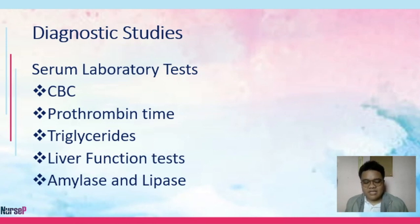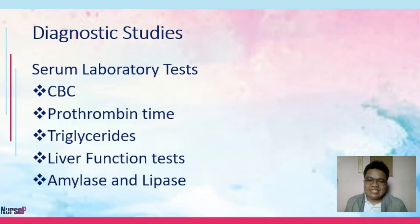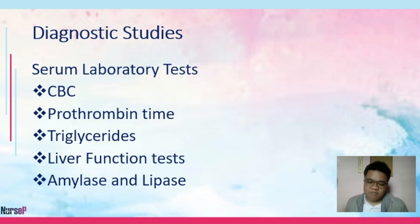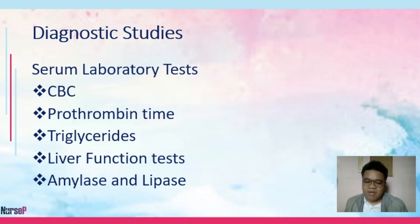For liver function tests, we commonly use SGPT and SGOT. Elevation of these enzymes indicates liver damage — an initial sign seen with fatty liver, hepatomegaly, liver infection such as hepatitis, or chronic liver disease such as cirrhosis. Amylase and lipase, on the other hand, are the enzymes released by your pancreas, and there is a normal range for each.